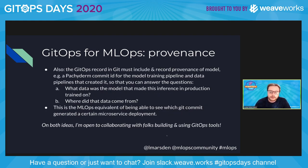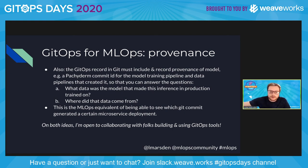The other point is about provenance. The GitOps record in Git needs to keep track of more than just the version of code that trained the model. It also needs a provenance record back from the production model to the code used to train it, but also what data was used, what parameters it was trained with, and where that data came from — a graph structure of data engineering steps that created the training set. This is really the MLOps equivalent of being able to see which Git commit led to a certain microservice being deployed.